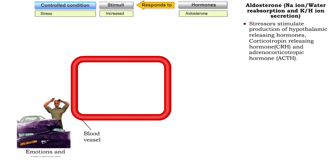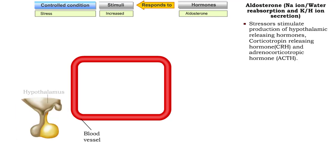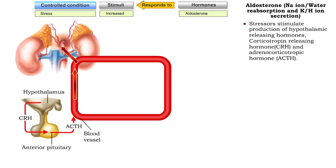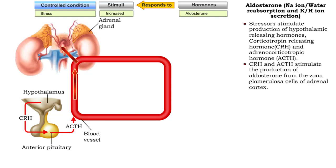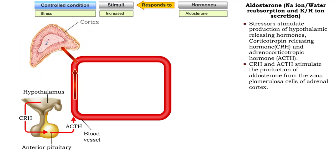Stressors, such as declining blood pressure due to blood loss or strong emotional reactions, stimulate production of hypothalamic-releasing hormone, cortisol-releasing hormone, and adrenocorticotropic hormone, ACTH, which in turn stimulate the production of aldosterone from the zona glomerulosa cells of the adrenal cortex.